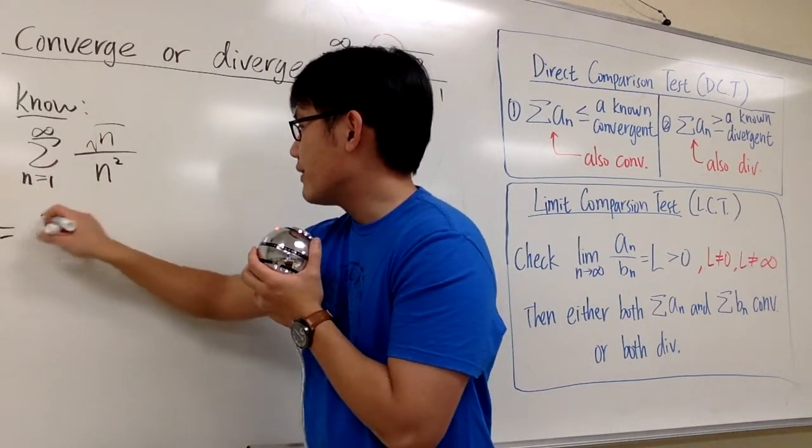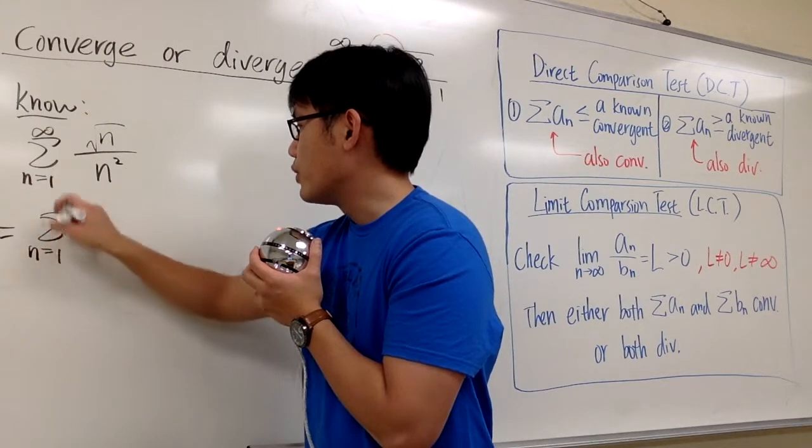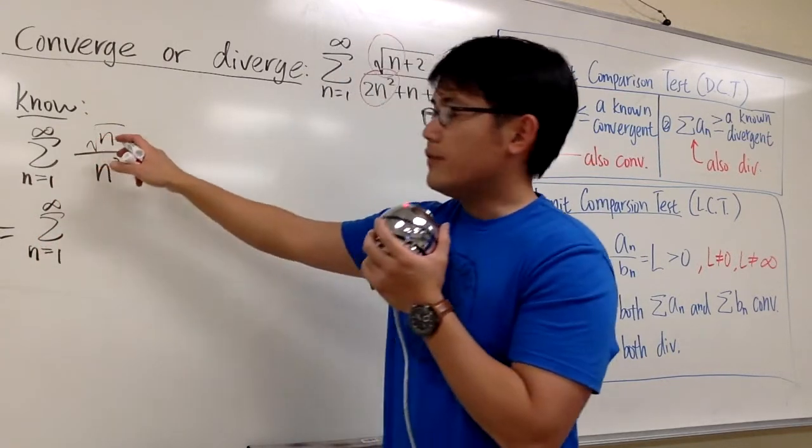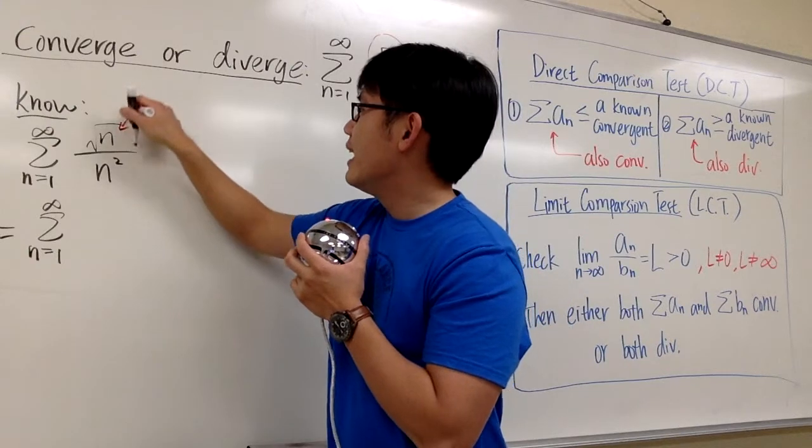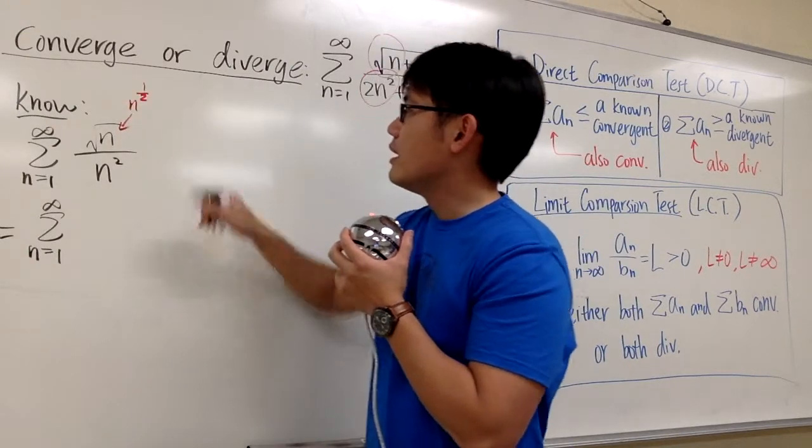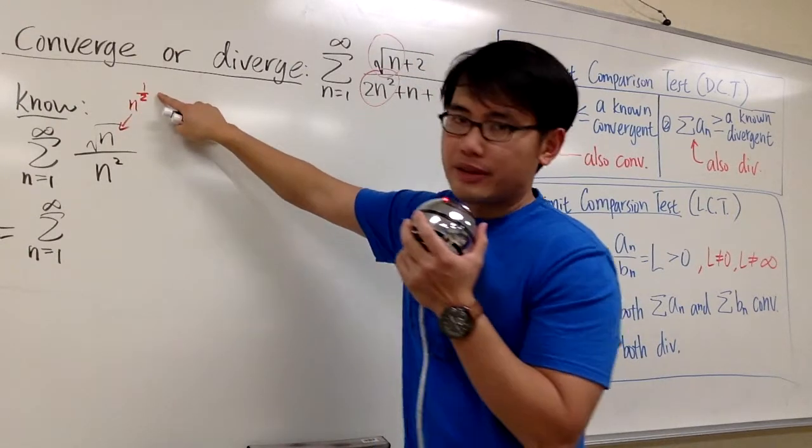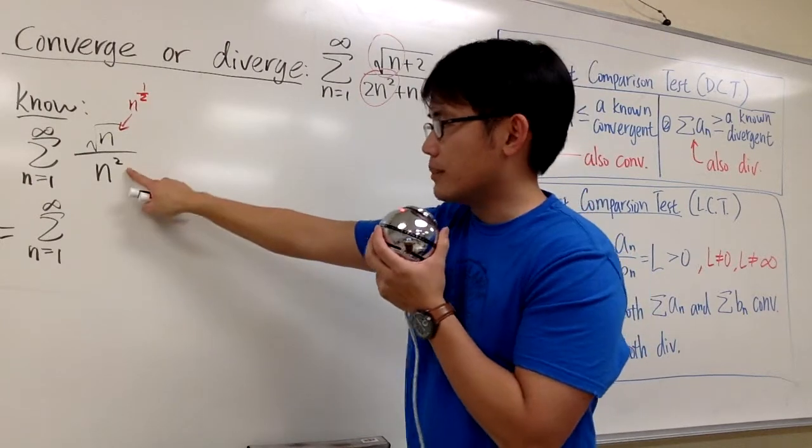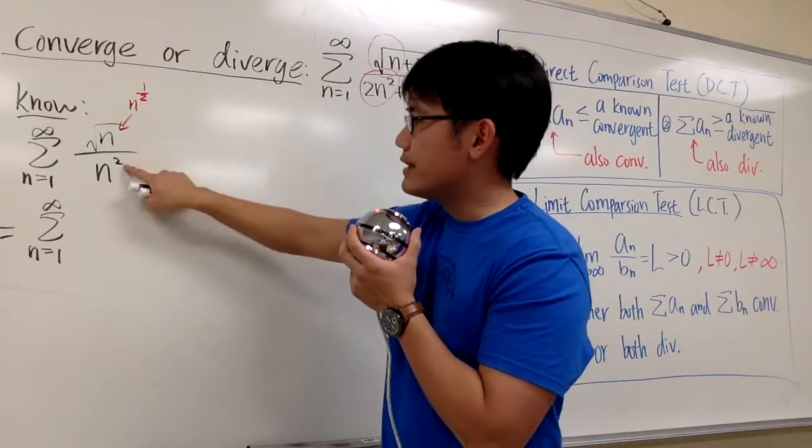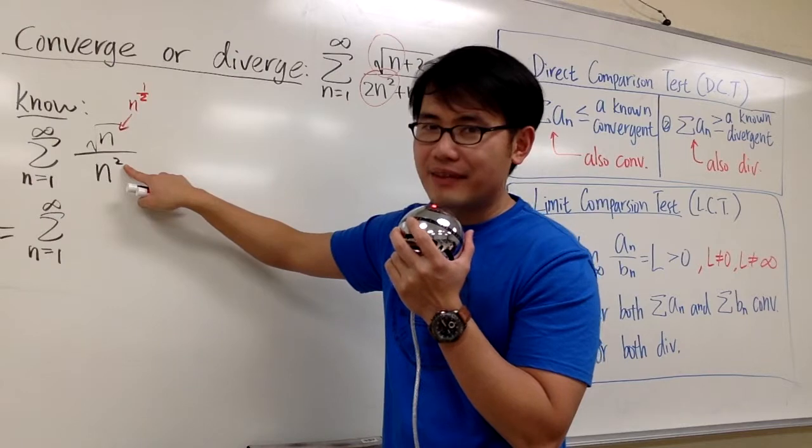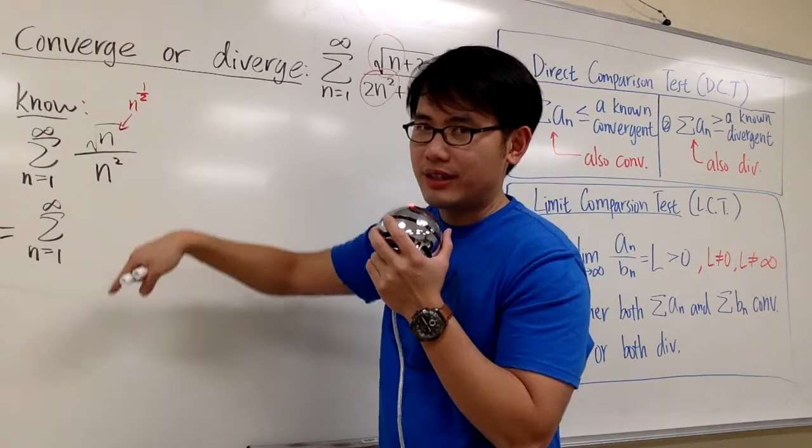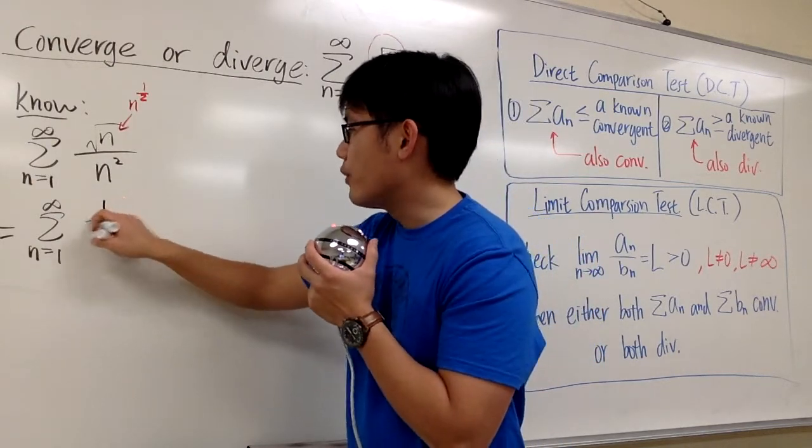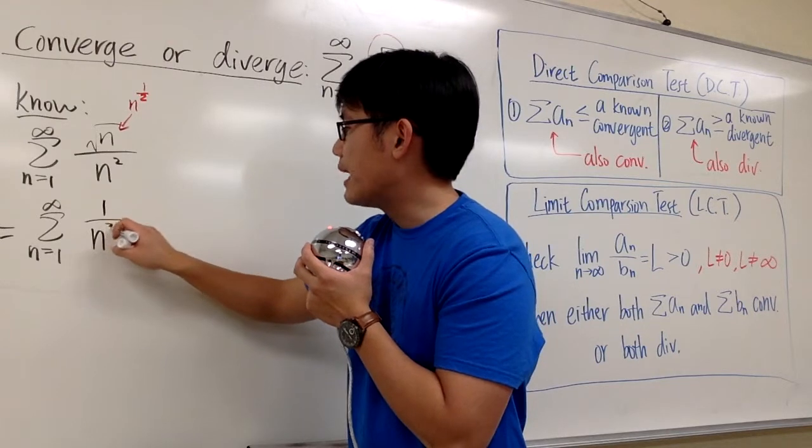Here we have sigma as n goes from 1 to infinity, the square root of n. This is like n to the 1 half power. So we have n to the 1 half power on the top over n squared on the bottom. 1 half minus 2 is negative 3 half. So we can just bring that to the denominator. It becomes 1 over n to the power 3 over 2.